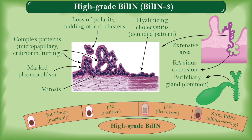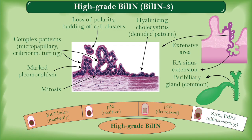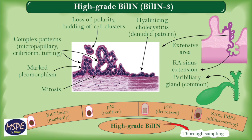As described, IHC may help in difficult cases. Ki-67 proliferation index is markedly increased. P53 is frequently positive. Decreased P16 staining pattern. S100 and IMP3 stains are diffuse and strong. Low-grade BilIN is of no clinical significance, whereas high-grade BilIN warrants thorough sampling to rule out any evidence of invasive carcinoma.